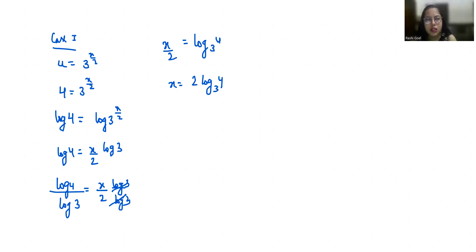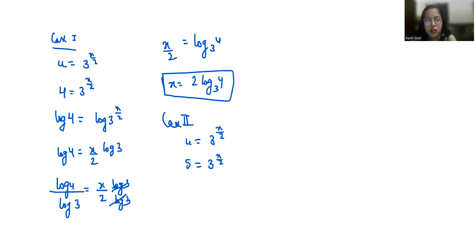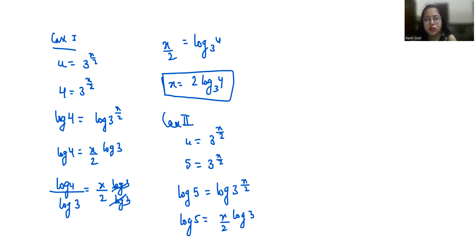Case 2: u equals 5, so 3 power x by 2 equals 5. Taking log of both sides and dividing both sides by log 3, x by 2 equals log base 3 of 5, so x equals 2 log base 3 of 5.